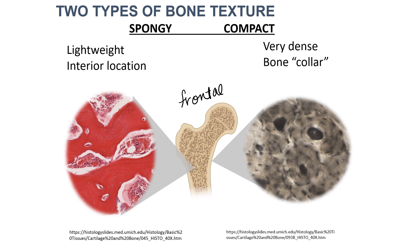Spongy bone is supported or surrounded by a denser form of bone called compact bone. The compact bone is only along the superficial faces of the bone, giving it strength only in certain directions.